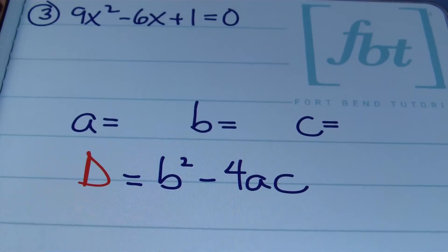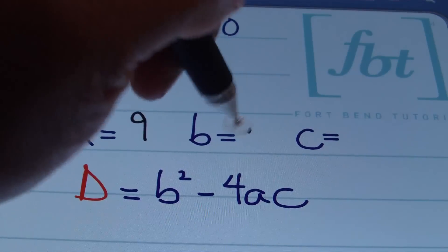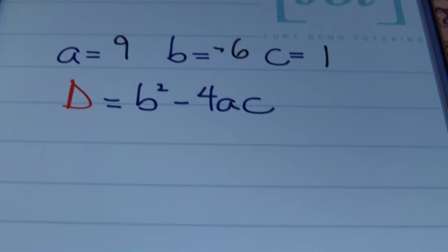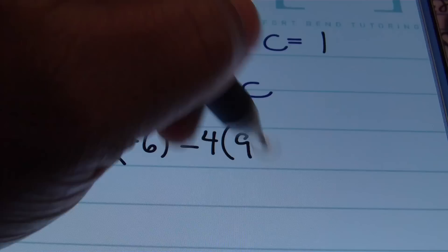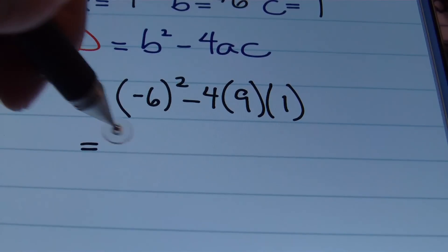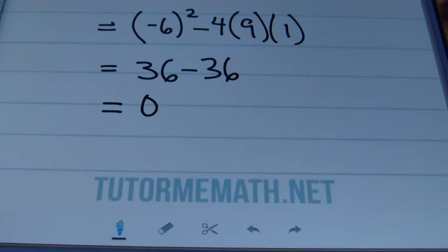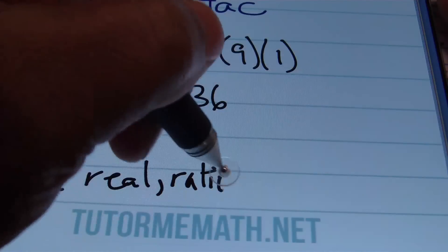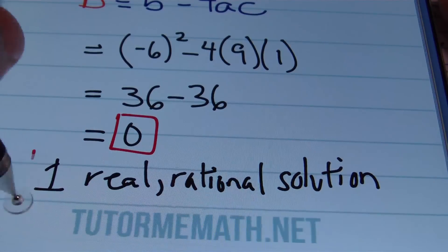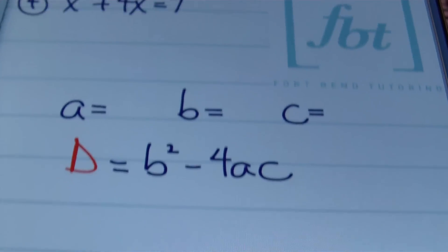In example three we have 9x squared minus 6x plus 1 equals zero. The coefficients are a equals 9, b equals negative 6, c equals 1. Plugging into the discriminant formula: negative 6 squared minus 4 times 9 times 1 gives 36 minus 36, which equals zero. Since the discriminant is zero, we end up with one real rational solution.